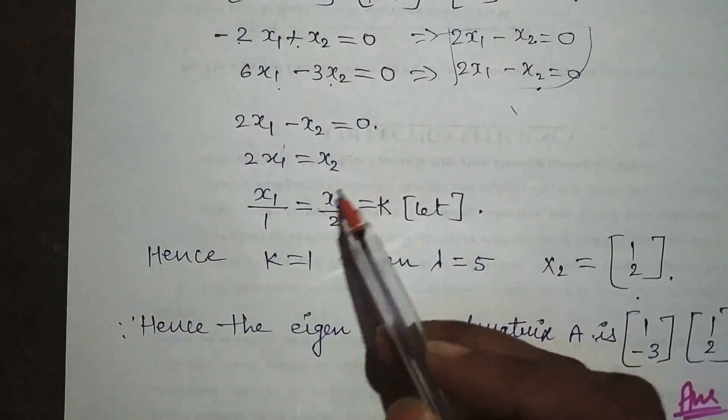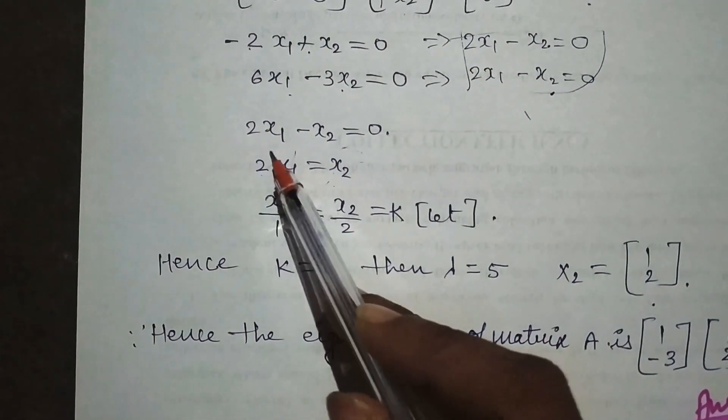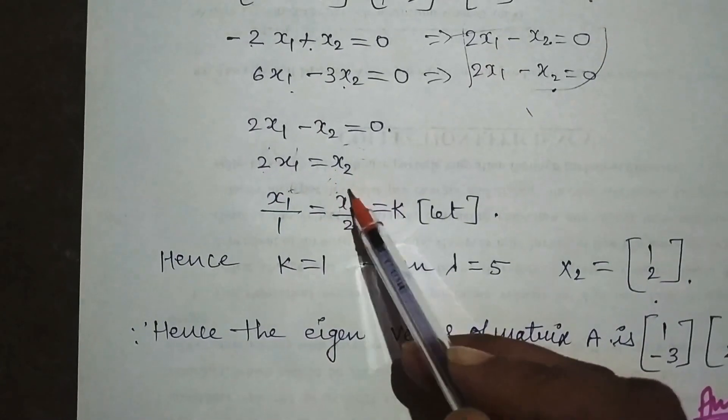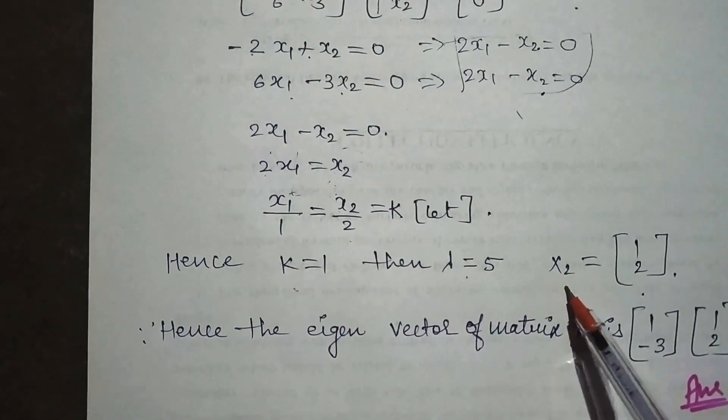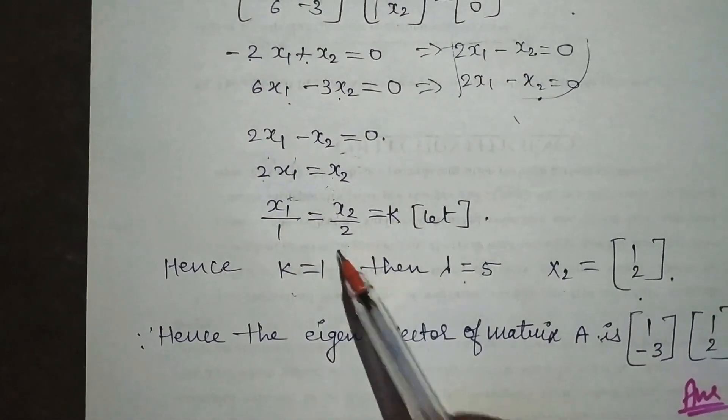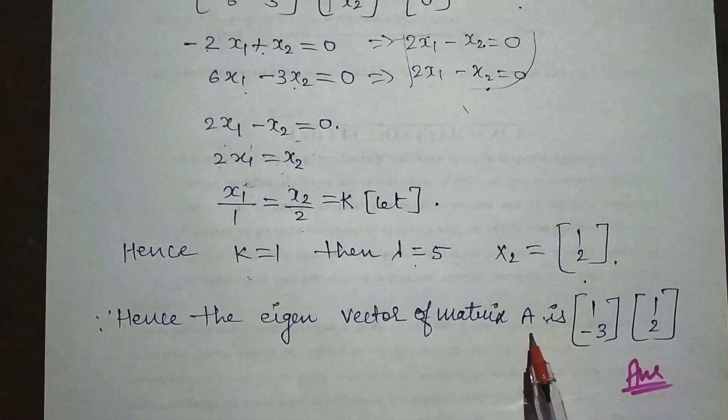We solve this, take it to the equal sign. The multiplication goes to the divider. When k = 1 and λ = 5, x's value is [1; 3]. This is your eigenvector for matrix A.